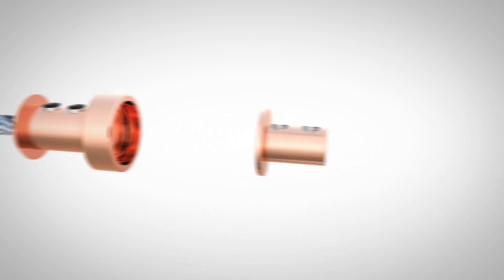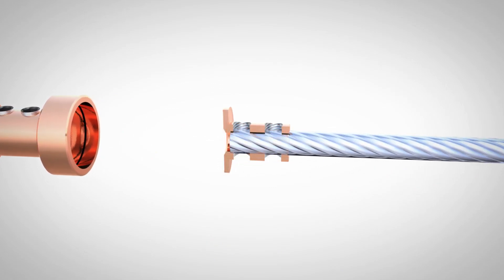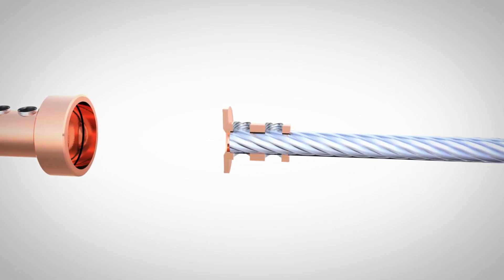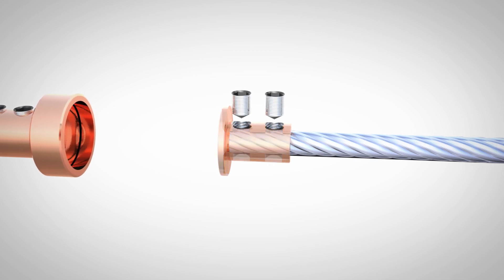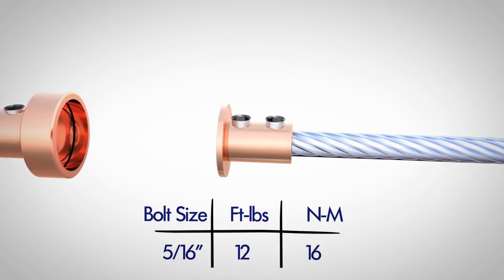Using the male end of the connector, add the connector end to line up with the opposite cable end facing the female end. Torque the two set screws to the appropriate level based on our torque chart.